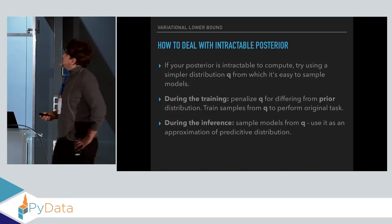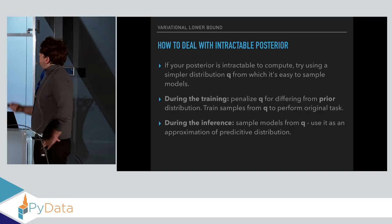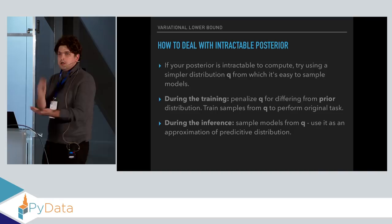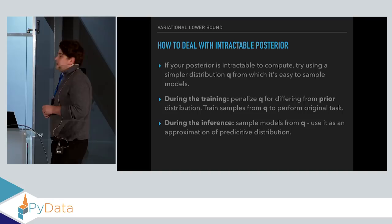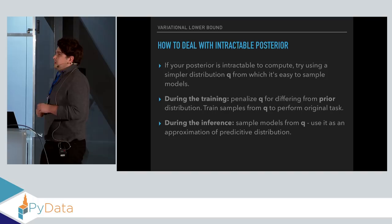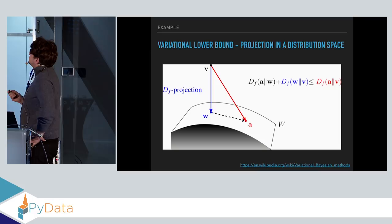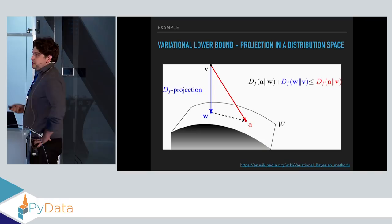During inference, once training is finished, we can sample from distribution Q and approximate different statistical measures to perform prediction, uncertainty estimation, et cetera. One can think about the variational lower bound as a projection — we have a posterior distribution and a subspace of easy-to-compute, easy-to-sample distributions, and we project our posterior distribution onto this simpler one.